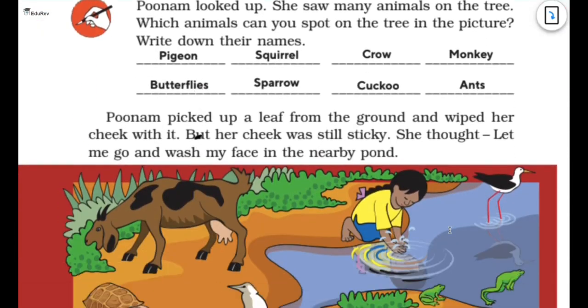Now, Poonam looked up. So when something fell on her face, she actually looked up and saw many animals on the tree. We just saw there were so many animals on the tree, right? Now which animals can you spot on the tree in the picture? Write down their names. So we saw pigeon, butterflies, squirrel and sparrow, crow and cuckoo, monkey and ants.